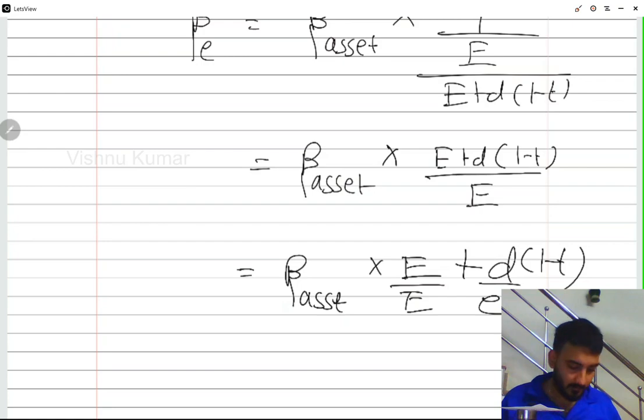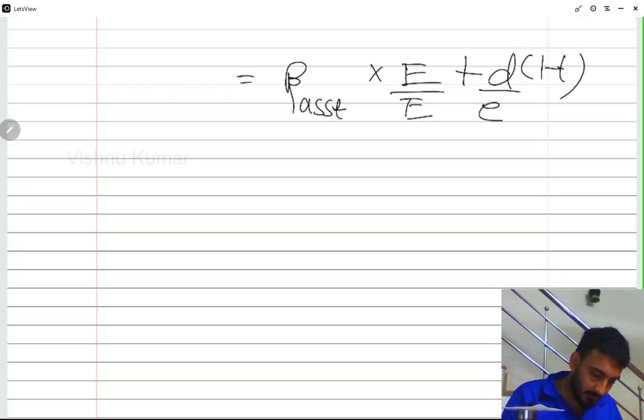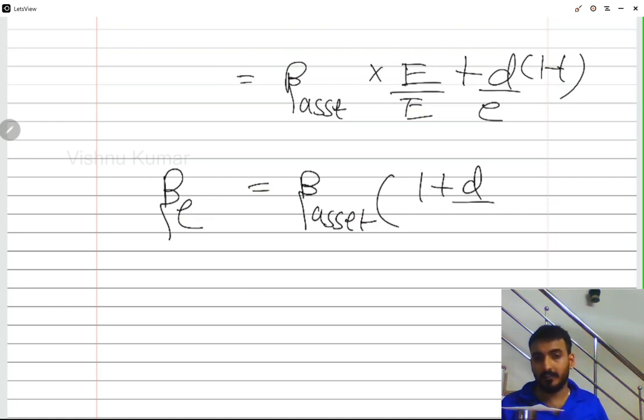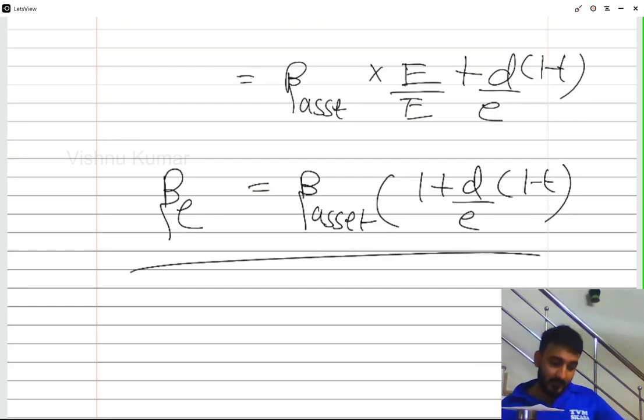Now E gets cancelled out. So you will get beta of your equity is equal to beta of your asset into 1 plus debt by equity into 1 minus T. This is the formula from the study material. In the exam, the formula is the origin of the formula. So that is the logic behind this formula.